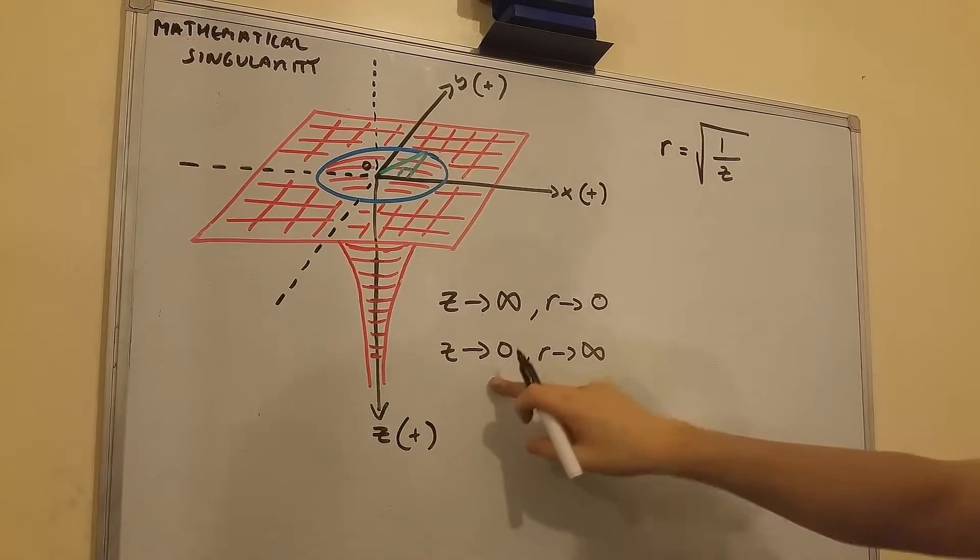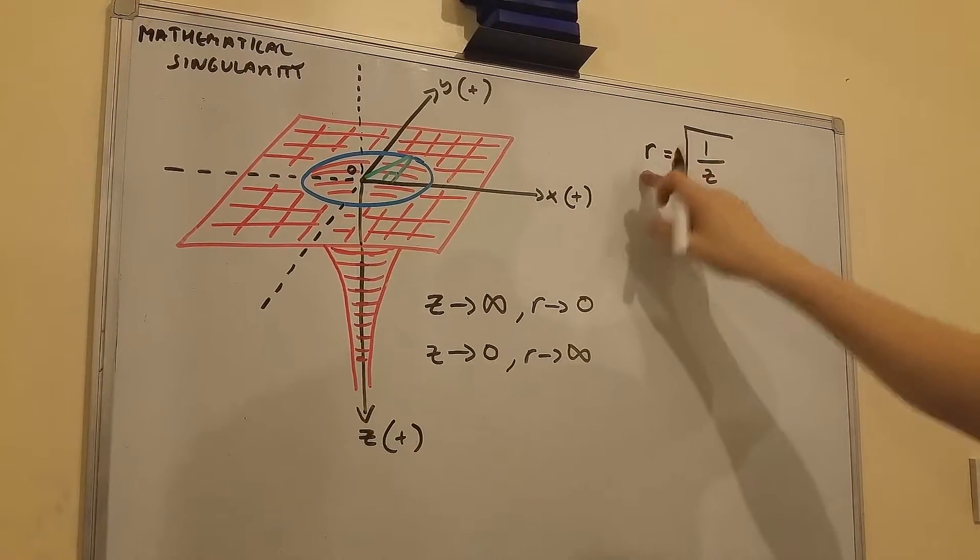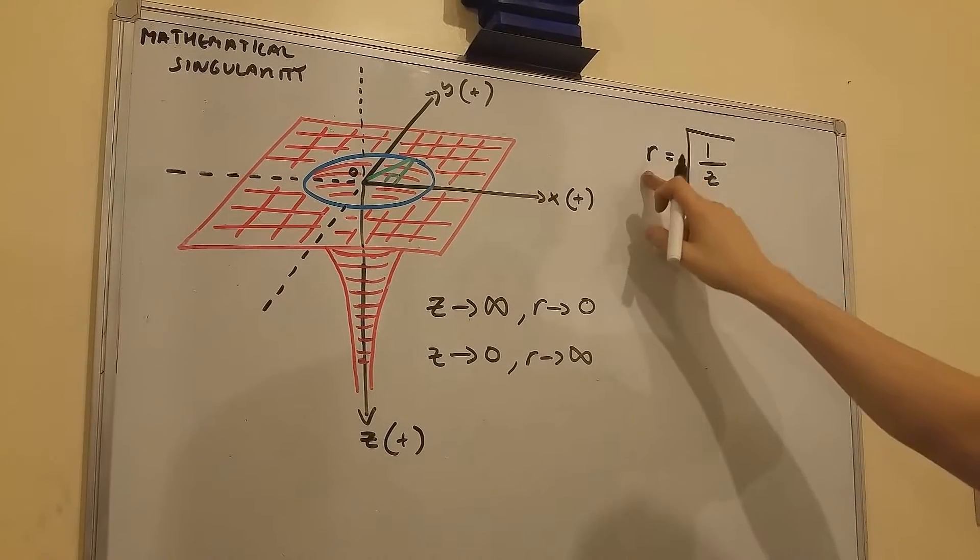But as z approaches zero, this fraction gets larger and larger, so r this time approaches infinity.